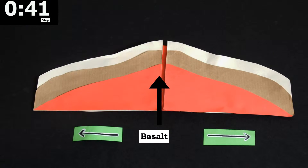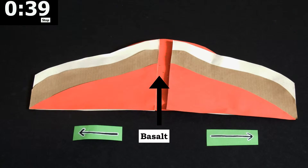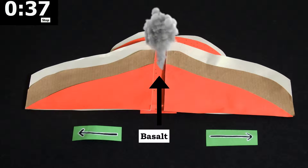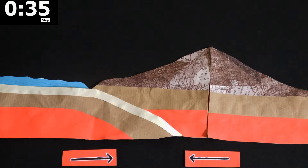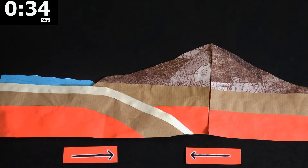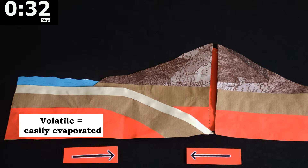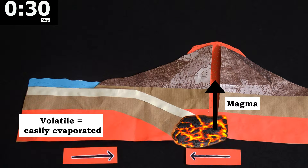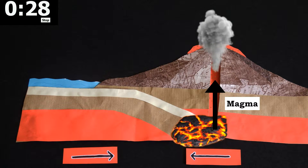Volcanoes can be formed at divergent boundaries, where basalt is erupted from seafloor spreading zones to form new oceanic crust. Volcanoes can also form at convergent boundaries, when volatiles, such as water and carbon dioxide, are released from the subducting plate, causing melting and eruption at the surface.